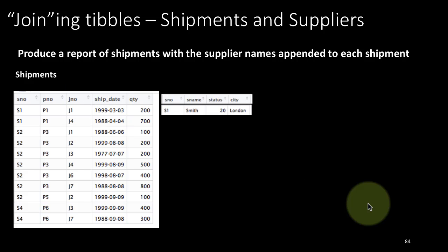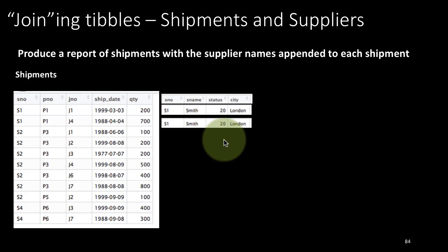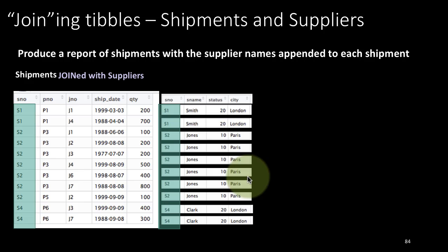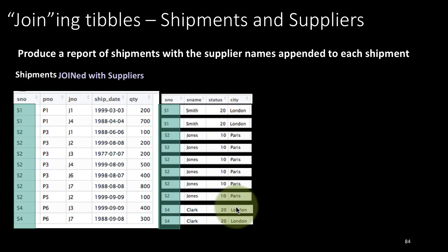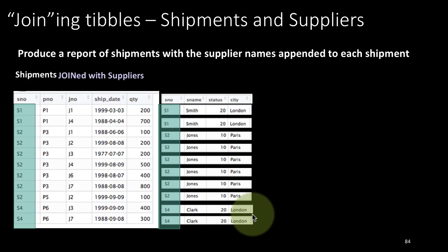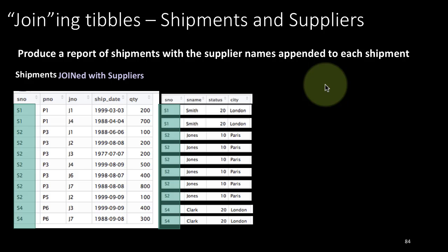For every row of the shipment table, we are going to bring in the corresponding row of the supplier table and append it. The first row was made by supplier S1, so let's bring along the data of supplier S1 and tag it along. The second row was also made by S1, so we tag S1 data to the second row as well. The third row was made by S2 so we tagged along S2, and so on for S3 and S4.